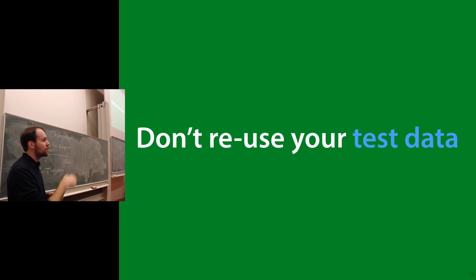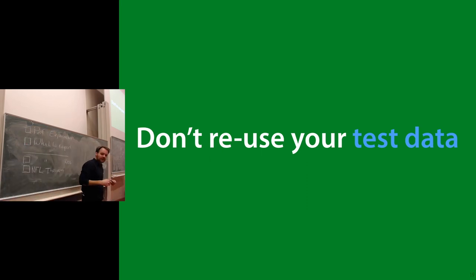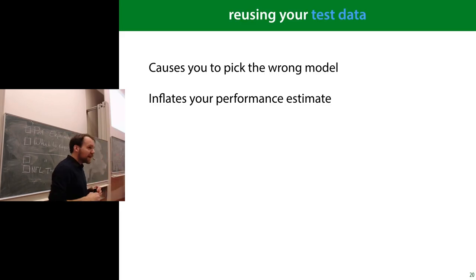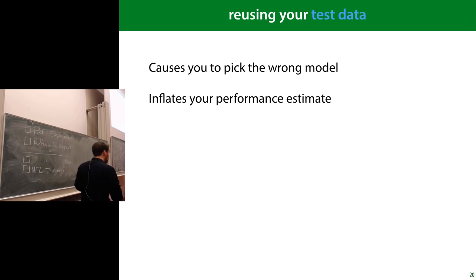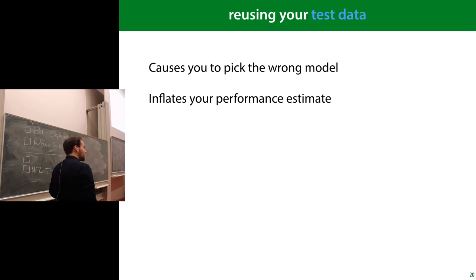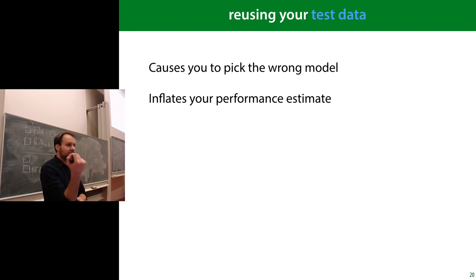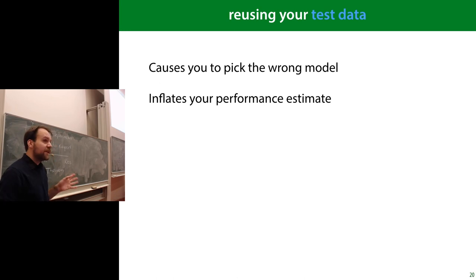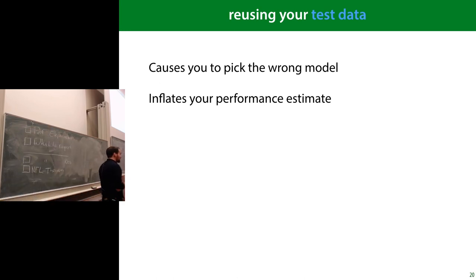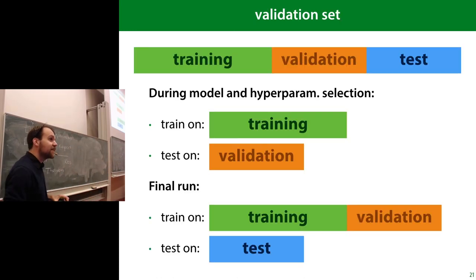Leave your test data alone and never look at it again until the end of your project. Because once you've looked at it and used it to draw conclusions, you can't un-look at it — it's an irreversible process. When you reuse your test data, two things happen: it causes you to pick the wrong model, and it inflates your performance estimates. Both models showed performance of 0.08, but part of that was by luck. Someone given that model will be disappointed when they try it on their own data.